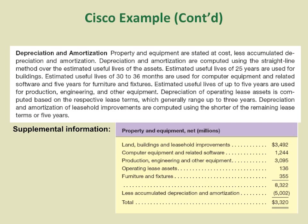Here's the footnote from Cisco related to the line item property, plant, and equipment on the balance sheet. They provided more detailed information and explanation. They listed all their assets, put them into different buckets, and disclosed the acquisition cost. Then they show the total accumulated depreciation and amortization. Using historical cost minus accumulated depreciation, they arrive at the $3,320 million shown on the face of the balance sheet.